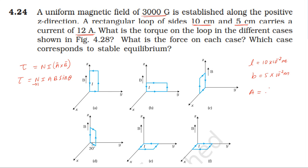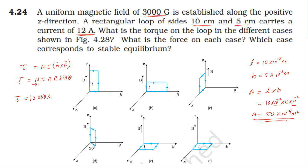The angle θ is between the area vector and the magnetic field. Area is equal to length into breadth. Length is equal to 10 × 10⁻² m, breadth is equal to 5 × 10⁻² m. So area = 10 × 5 × 10⁻⁴ = 50 × 10⁻⁴ = 5 × 10⁻³ m². Number of turns n = 1, so nIA = 1 × 12 × 5 × 10⁻³.